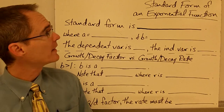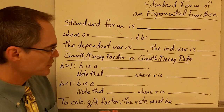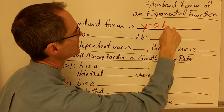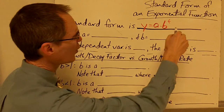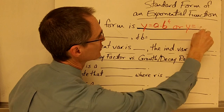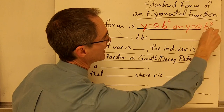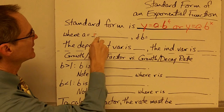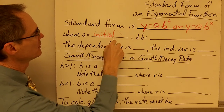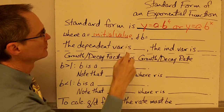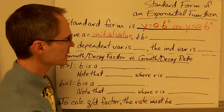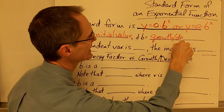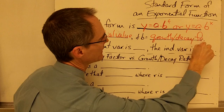In this video we're going to look at the standard form of an exponential function. The standard form is written like this: y equals a times b to the power of t, or sometimes y equals a times b to the power of x. Here, a is called the initial value of the exponential function, and b is called either the growth or decay factor.